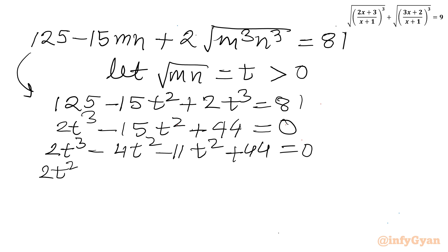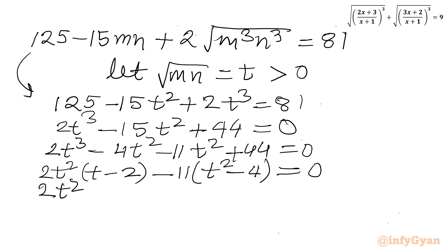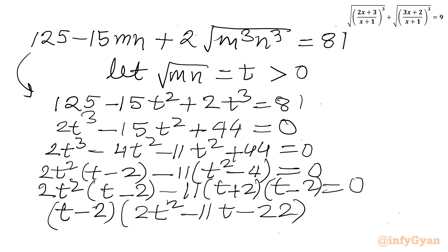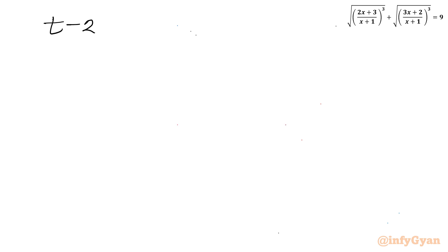Now 2t² is common from the first two terms, factoring as 2t²(t-2). Then taking -11 common from the remaining terms gives -11(t²-4) = -11(t+2)(t-2). So the full factorization is: 2t²(t-2) - 11(t+2)(t-2) = 0. Taking (t-2) as the overall common factor gives (t-2)(2t² - 11t - 22) = 0.